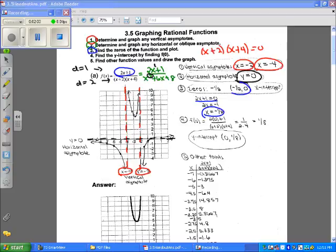So negative 1 half, 0 is an x-intercept. That's right there on the graph. Now the next thing we want to do is find the y-intercept. The way we find the y-intercept is find f of 0, which is right here. We plug in 0 for our function, and we get 1 eighth. So the y-intercept is 0, 1 eighth, which is right here.